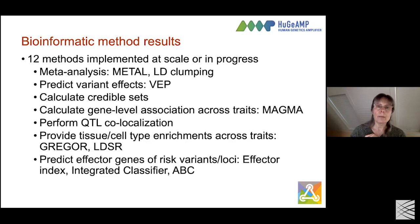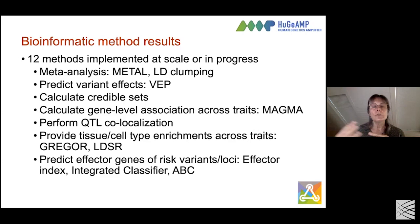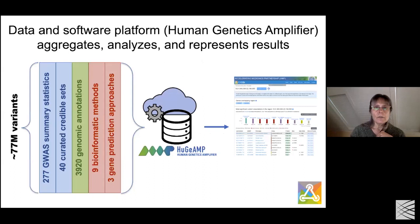The third type of information is the results of bioinformatic methods. We have 12 methods now that we are either running routinely or working on. By integrating and using different algorithms on genetic association and epigenomic data, you can make predictions and get more value. The synergy between the two data types can give new suggestions about how variants are working, in which tissues, and on which genes they act. Our database has over 77 million variants, including these three types of data from genetics, genomics, and method results.